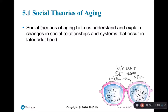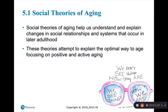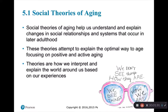Social theories of aging help us understand and explain changes in social relationships and systems that occur in later adulthood. These theories attempt to explain the optimal way to age, focusing on positive and active aging. These theories are how we interpret and explain the world around us based on our experiences.